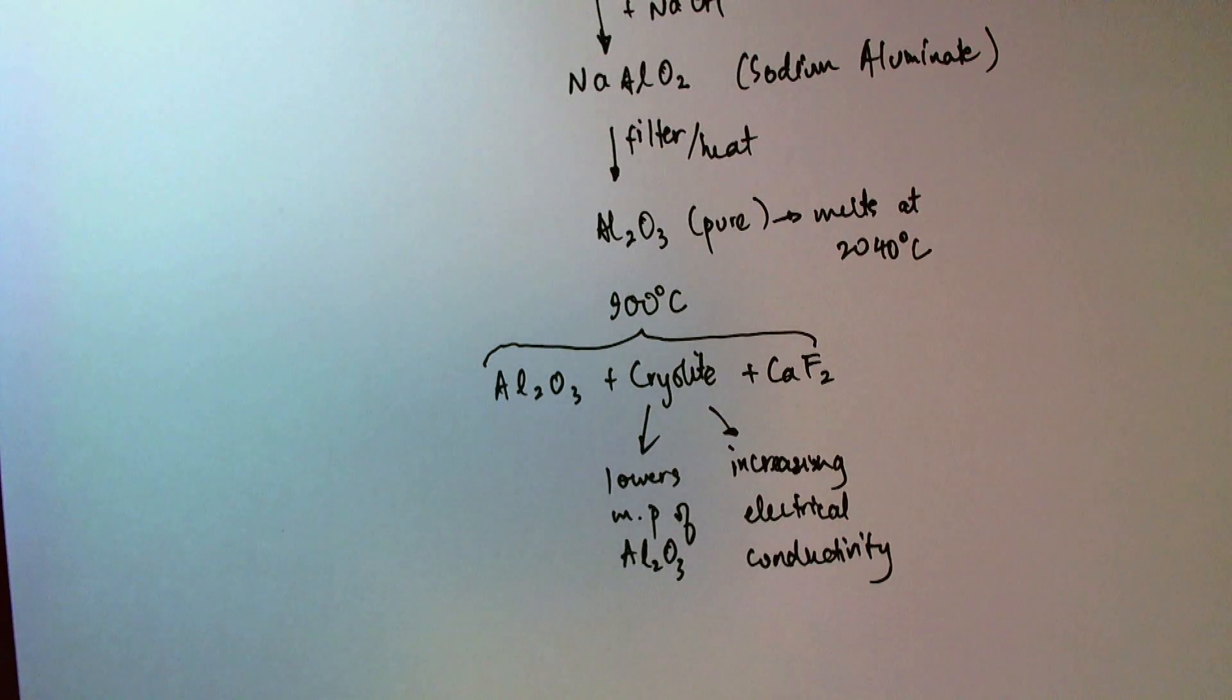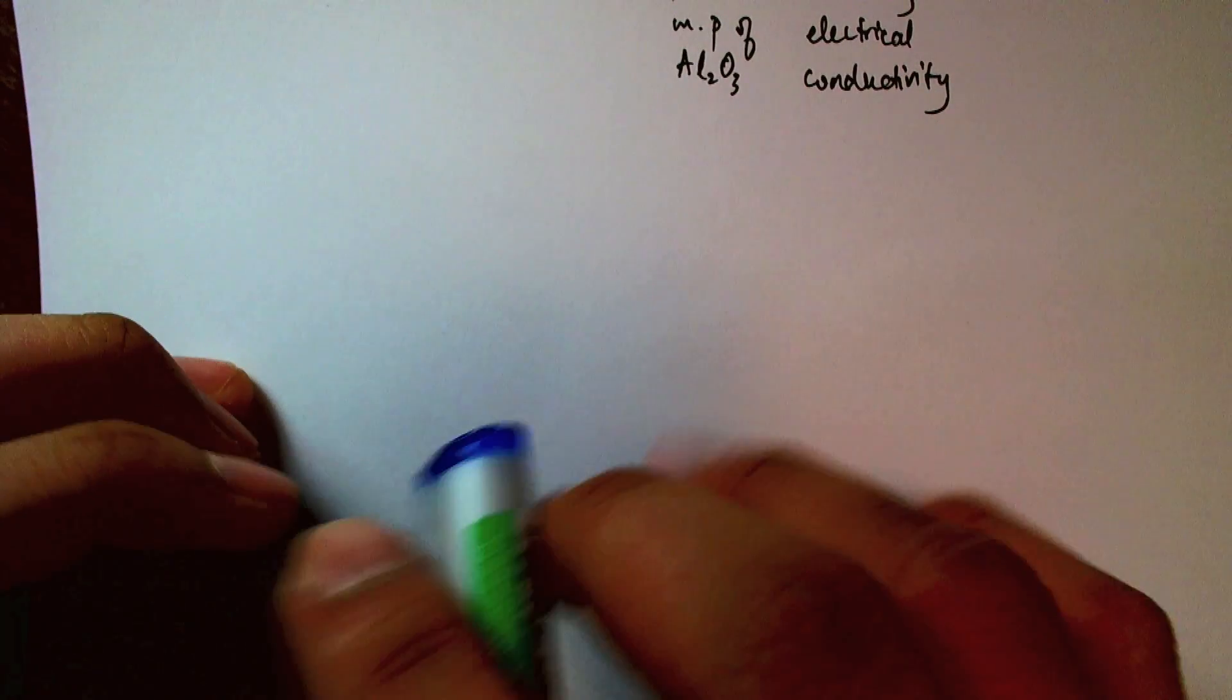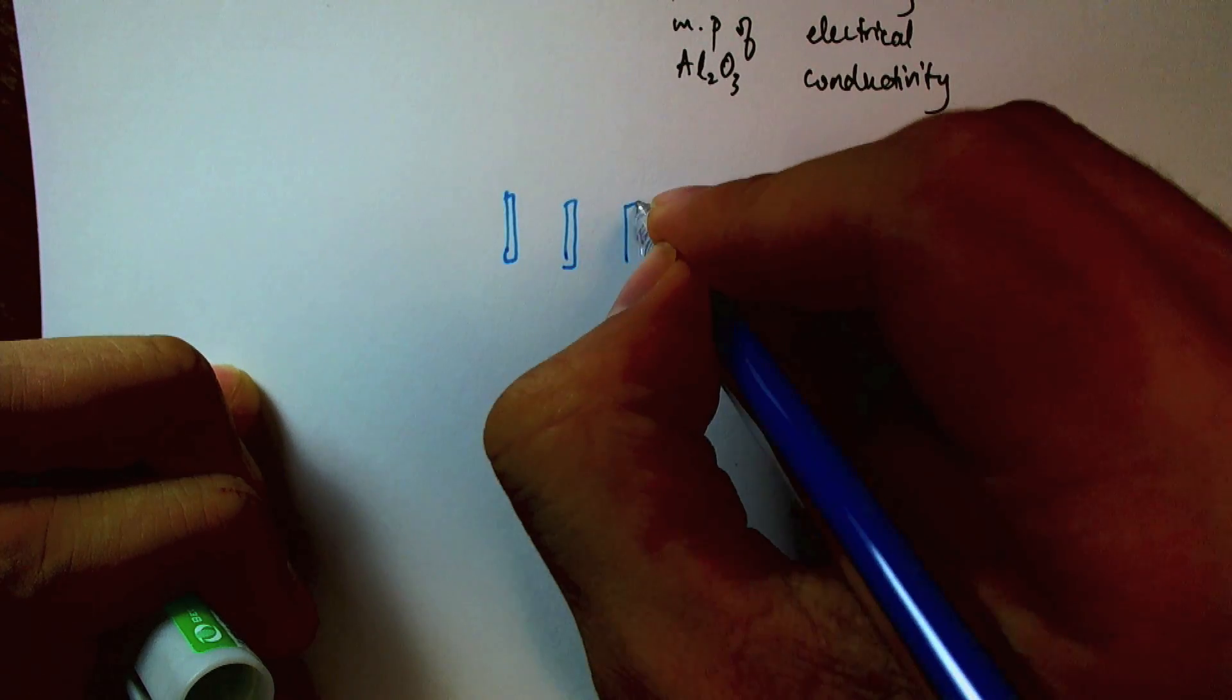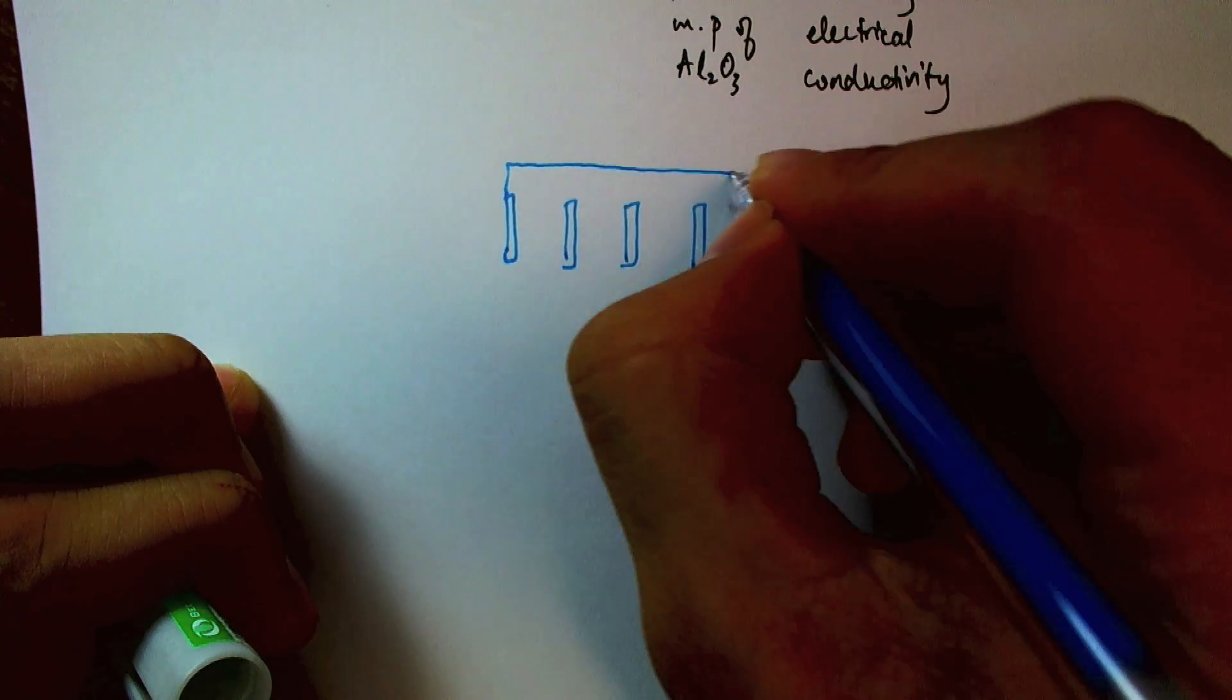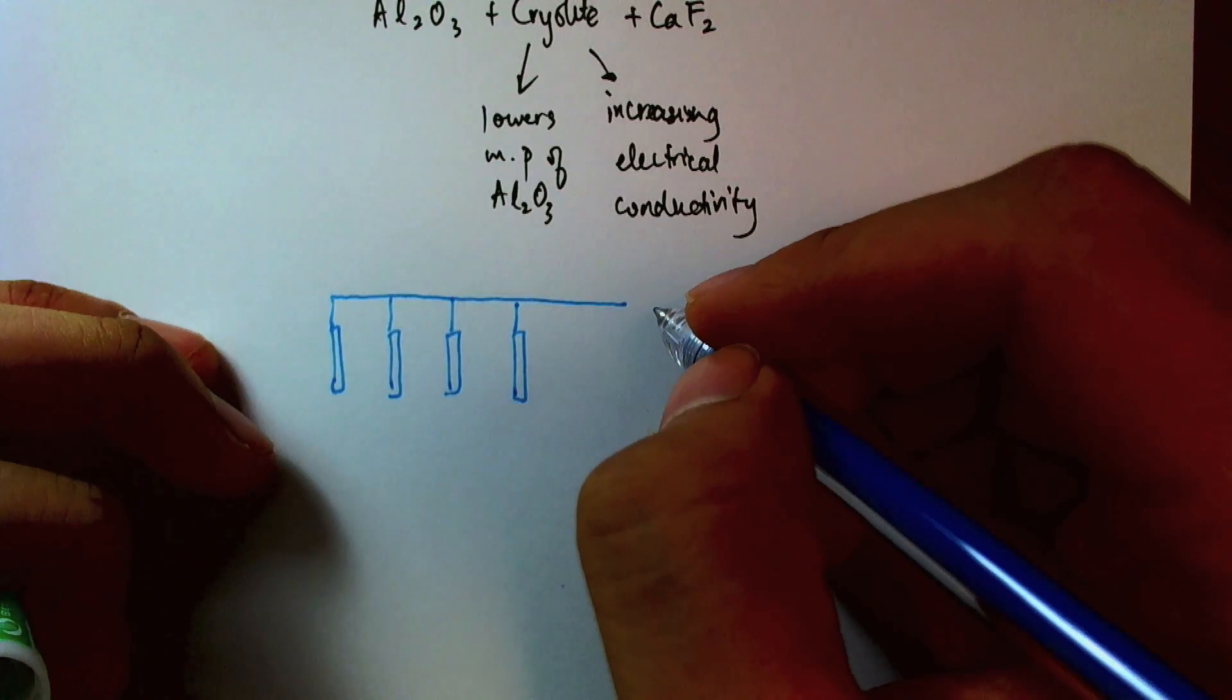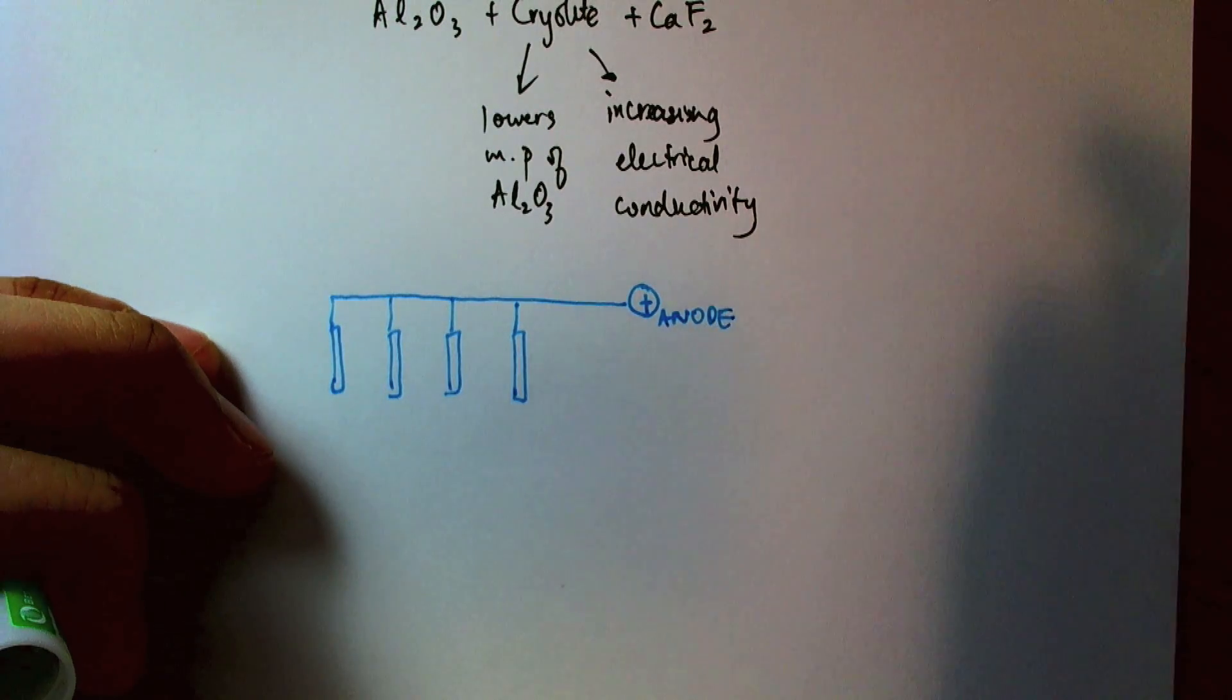So let's go ahead and set up our apparatus to electrolyze aluminum oxide. The setup that we'll use is inert electrodes. So we'll go back to using carbon electrodes. I have four carbon electrodes here, and these are connected to the positive end of the battery. So these will be my carbon anodes.